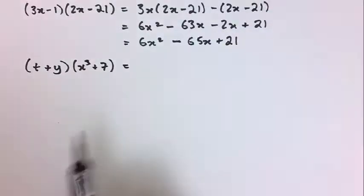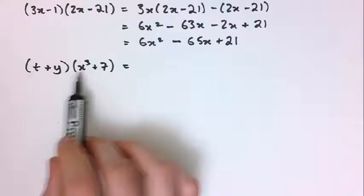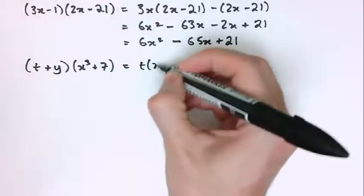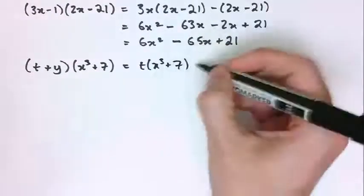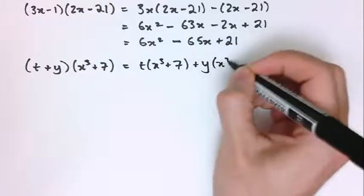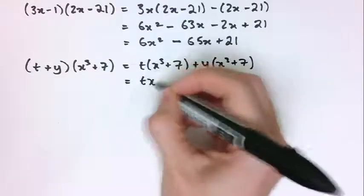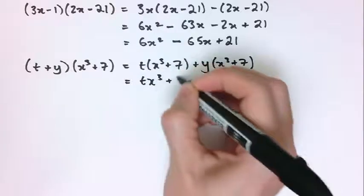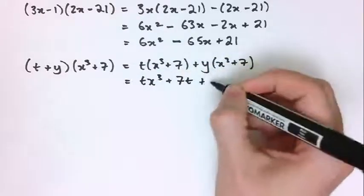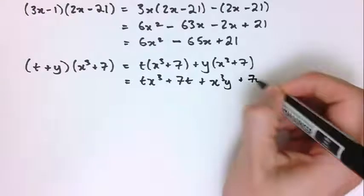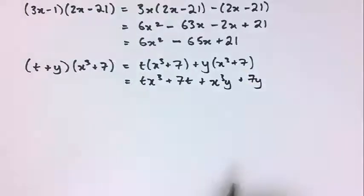You can also have different variables in the brackets. For (t + y)(x cubed + 7): that's t lots of (x cubed + 7) plus y lots of (x cubed + 7), which gives tx cubed plus 7t plus x cubed y plus 7y. There are no like terms to collect here — they're all different.